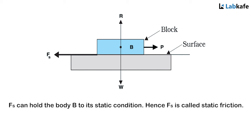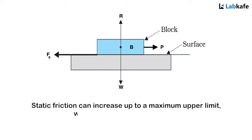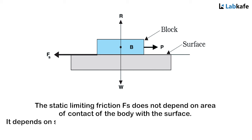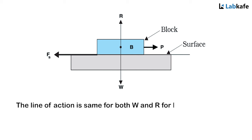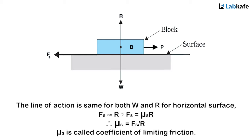Since static friction can increase up to a maximum upper limit, we call it static limiting friction. The static limiting friction Fs does not depend on the area of contact of the body with the surface. It depends on surface condition and properties of materials in contact. Therefore F is directly proportional to the normal reaction of the surface R, which is given by the total weight W of the body. For horizontal surface, Fs is proportional to R, or Fs equals μs R. Therefore μs equals Fs by R, where μs is called coefficient of limiting friction.